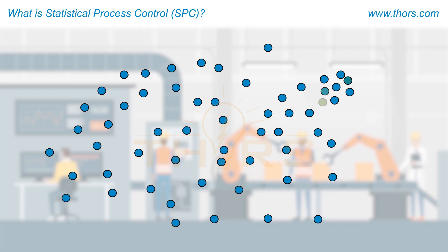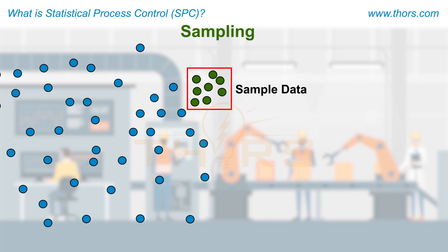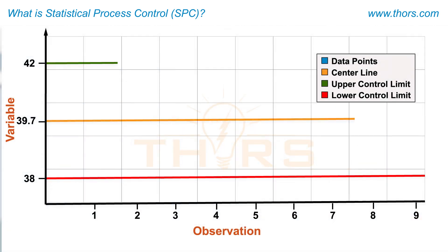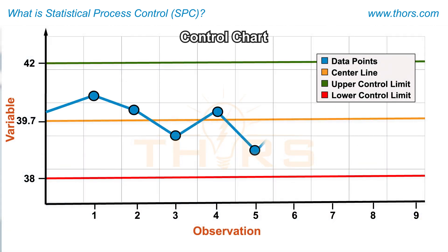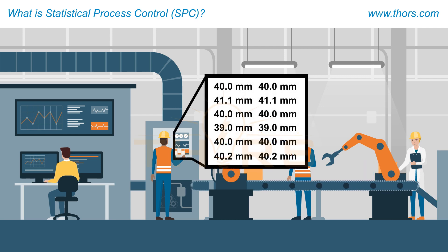A set of data points from the population is gathered as a representative sample to study the population. This process is known as sampling. In SPC, the sample is evaluated and the results are plotted on control charts to predict the outcome of the process. In order to improve and control a process, data must be collected on the process quality characteristics or output characteristics.